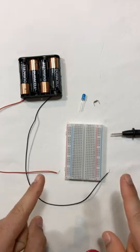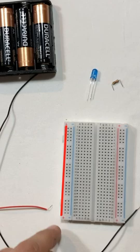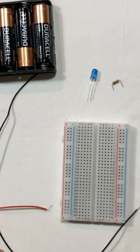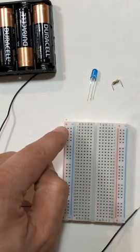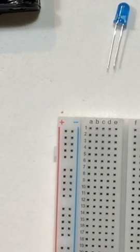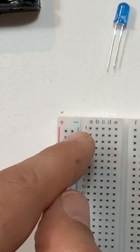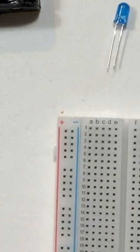So the way a breadboard works is you have rows and you have columns which are electrically connected. You can see a plus sign here and this column of nodes is all connected. Also here you have a negative sign and this column of nodes is all connected as well.